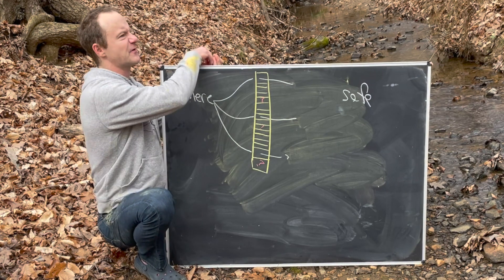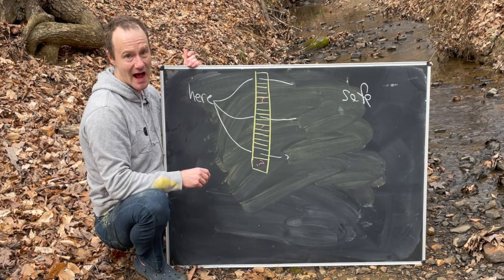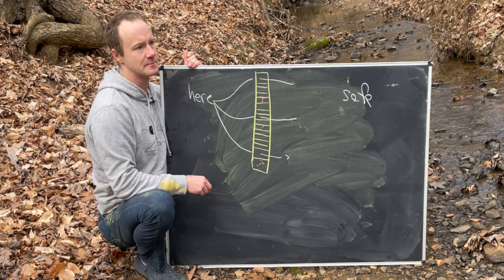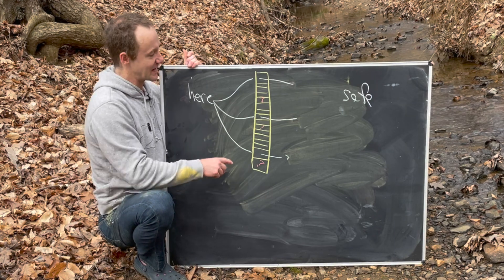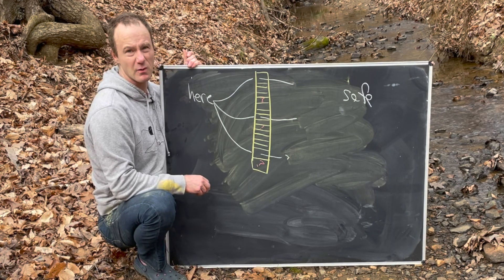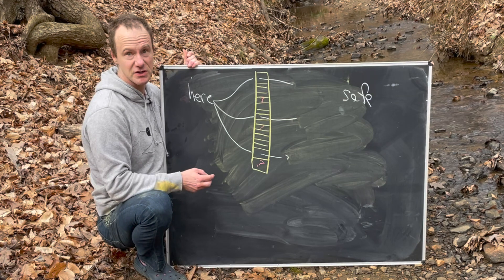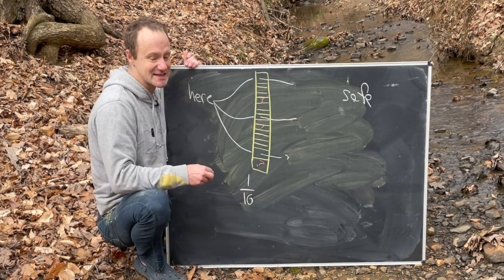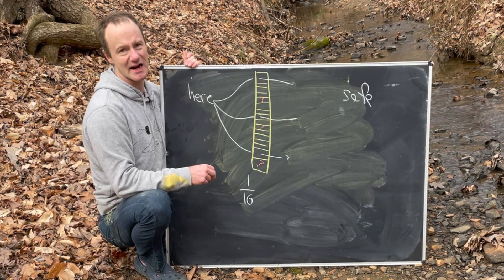So now let's first think about what are the chances that I interact with the infected between here and my next safe spot. Well, if the infected is randomly chosen along one of these paths, and I randomly choose one of these paths, then there is a 1 over 16 chance that I interact with an infected.